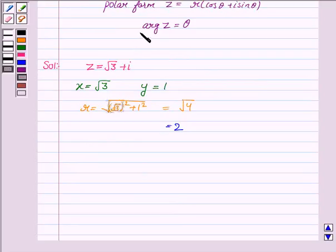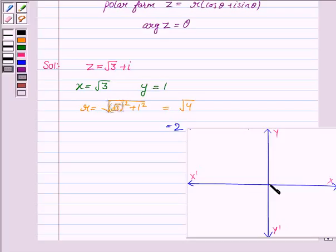Now we have to obtain argument of z, that is theta. For that, let us first plot the point x equals root 3 and y equals 1 on the argand plane. So this is the argand plane. Since both the points are positive, it lies in the first quadrant, and this point is root 3, 1, and its distance from the origin is 2.